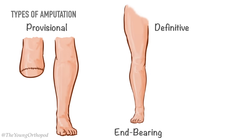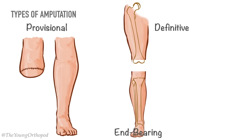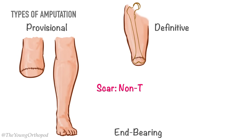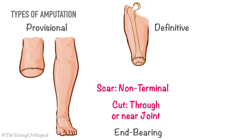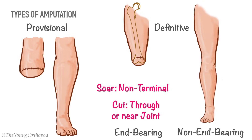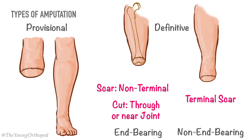A definitive end-bearing amputation is performed when weight is to be borne through the end of the stump. Therefore, the scar must not be terminal and the bone end must be solid, not hollow, which means it must be cut through or near a joint. A definitive non-end-bearing amputation is the commonest type; because weight is not taken at the end of the stump, the scar can be terminal.